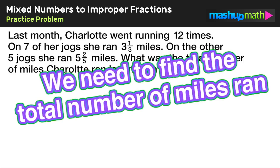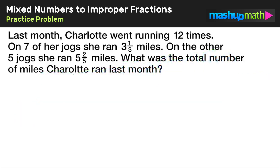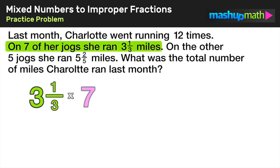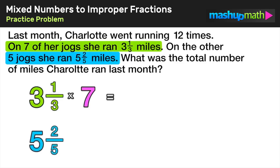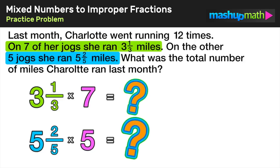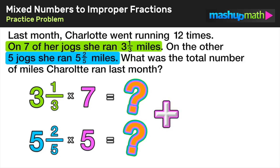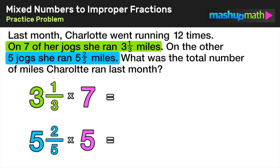Here's our breakdown: on seven of her jogs she ran three and one-third miles, and on five of her jogs she ran five and two-fifths miles. By finding these two products I can add them together and figure out how many total miles she ran.